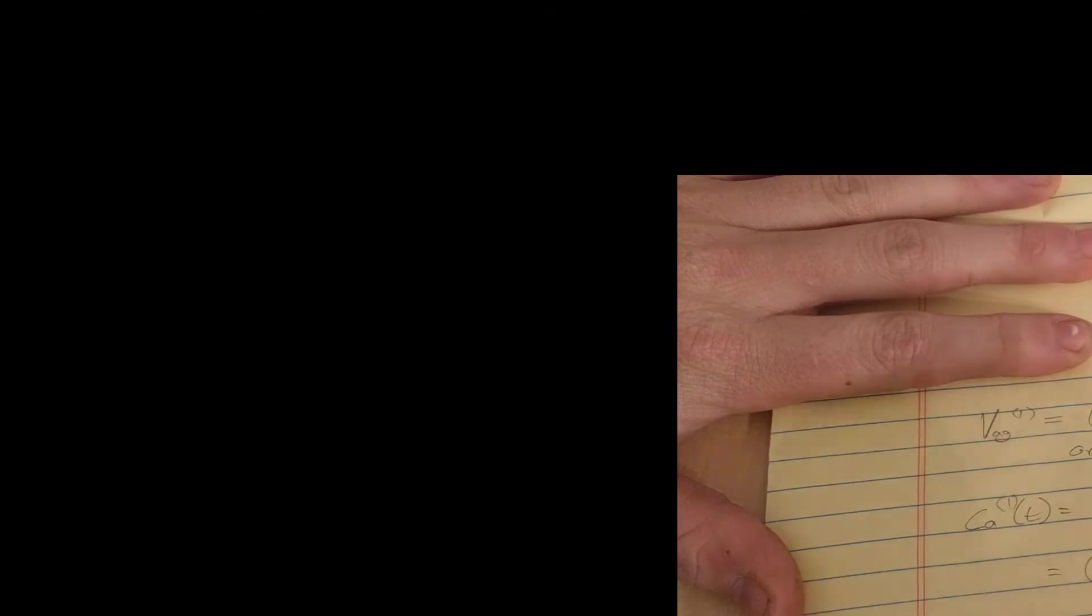That's a t prime there. So now I'm going to integrate with respect to t prime. So there we have it. Our first order perturbed probability amplitude to be in state A, starting from a ground state G.